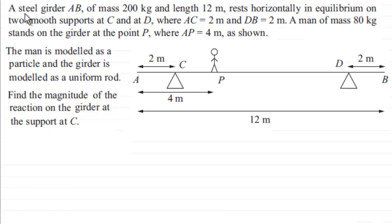What we've got is a steel girder AB of mass 200 kilograms and length 12 meters, and it rests horizontally in equilibrium on two smooth supports at C and at D, where the length AC is 2 meters.